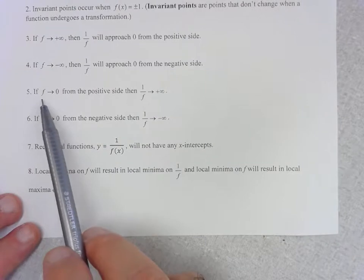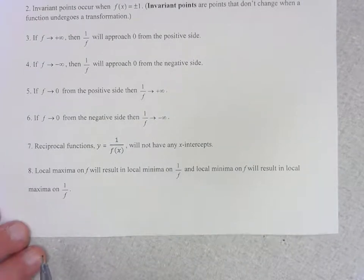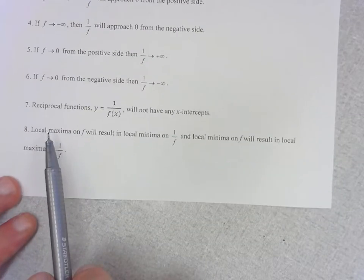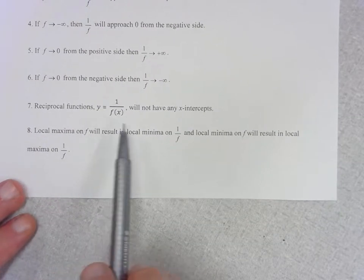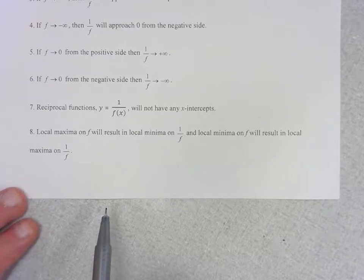Okay, here if f is approaching 0 from a positive side, then 1 over f is going to approach positive infinity. Okay, here we see that local maximum on f will become local minimum on 1 over f and vice versa.